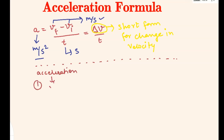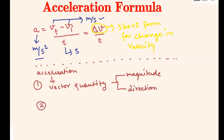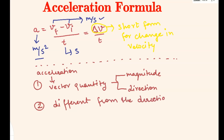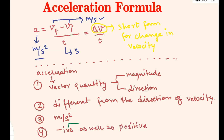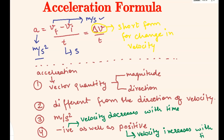First, acceleration is a vector quantity, which means it has both magnitude and direction. The direction of acceleration can be different from the direction of velocity. Third, the unit of acceleration is meters per second squared. Fourth, acceleration can be negative as well as positive. Negative acceleration means the velocity decreases with time, and positive acceleration means velocity increases with time.